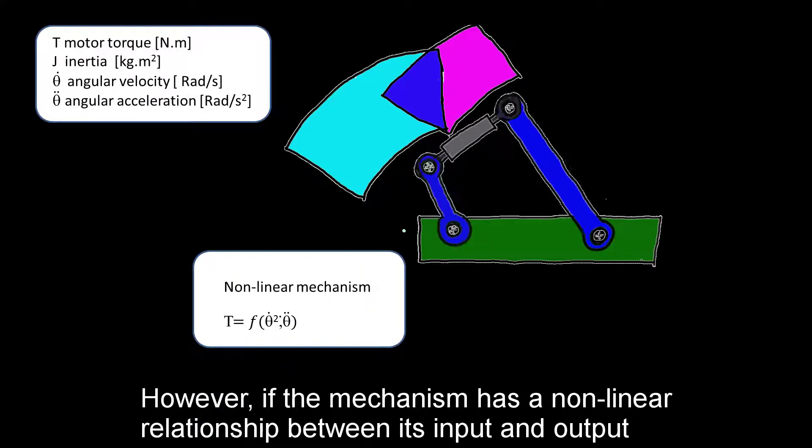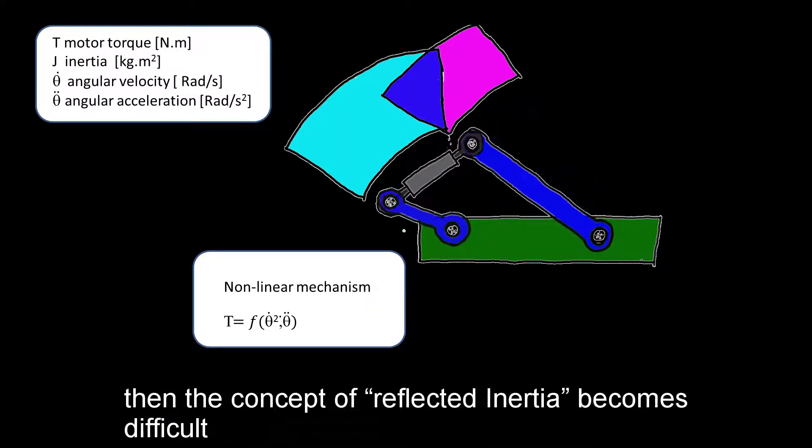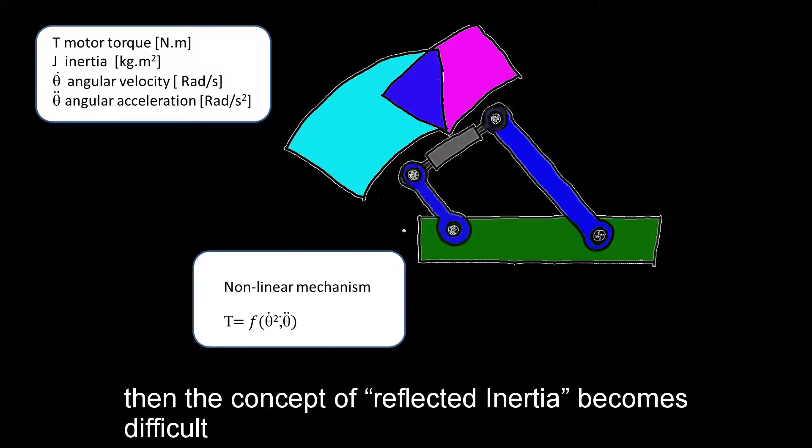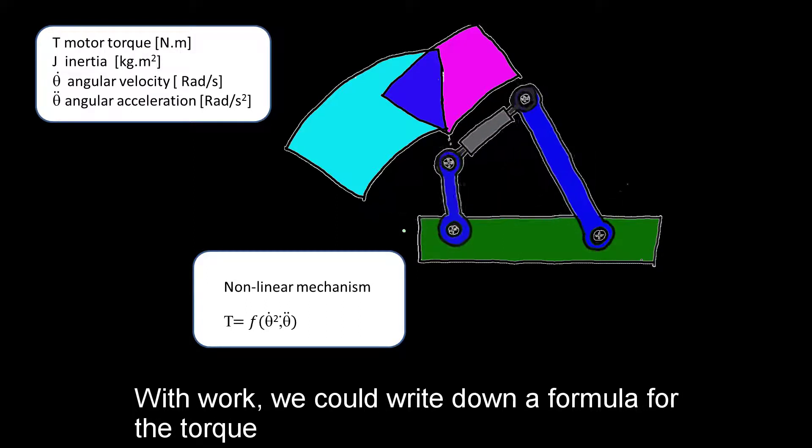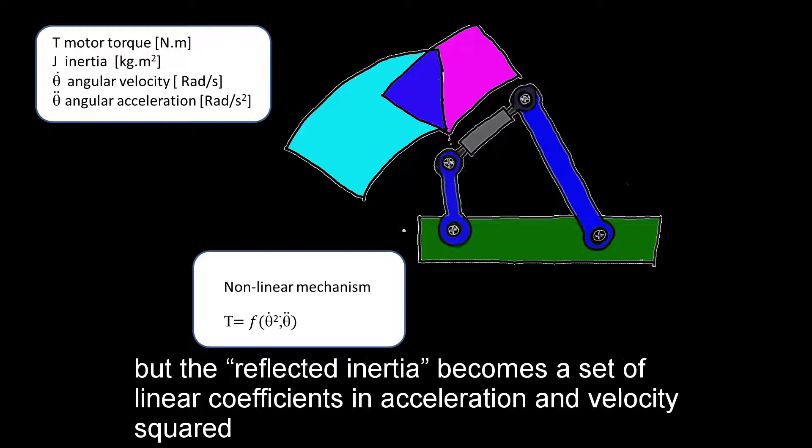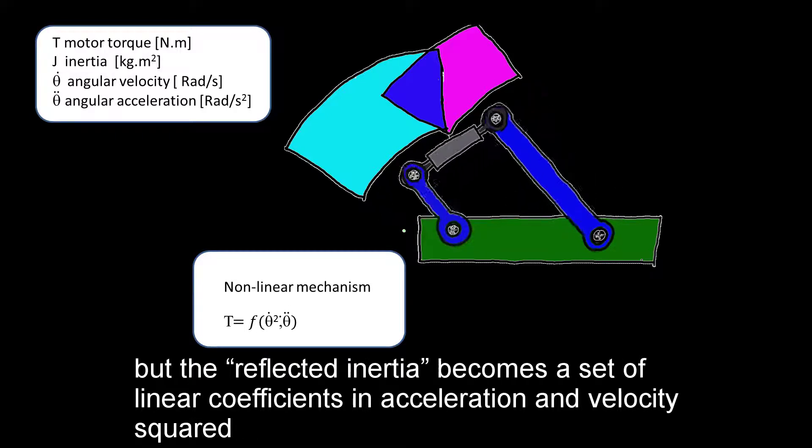However, if the mechanism has a non-linear relationship between its input and output, then the concept of reflected inertia becomes difficult. With work, we could write down a formula for the torque, but the reflected inertia becomes a set of linear coefficients in acceleration and velocity.